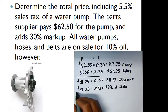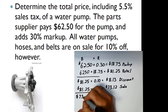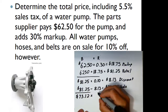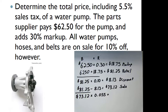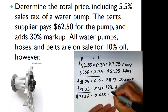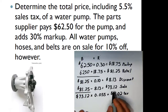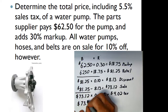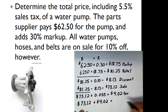Now $73.12 becomes the base for the sales tax. We multiply $73.12 by the sales tax rate of 5.5%, which is 0.055, and that gives us $4.02 in tax. So the sale price of $73.12 plus $4.02 in tax gives us a final answer of $77.14.